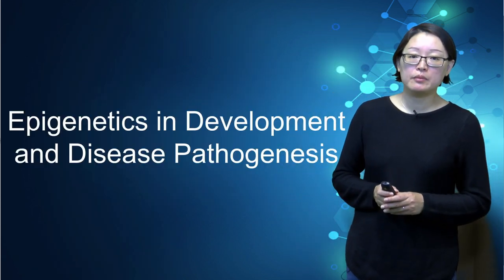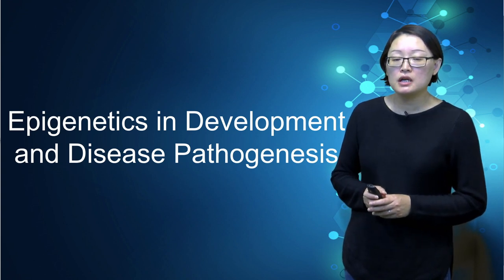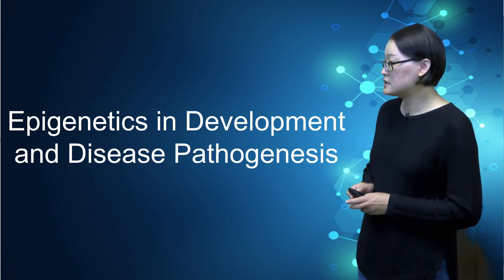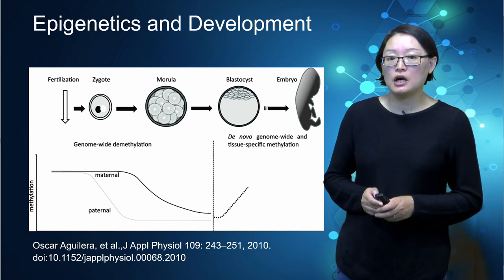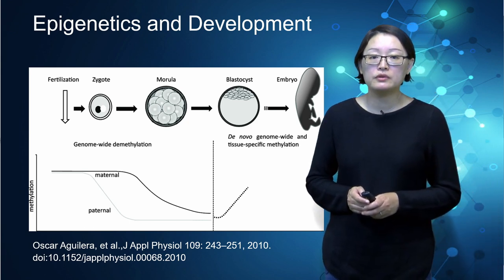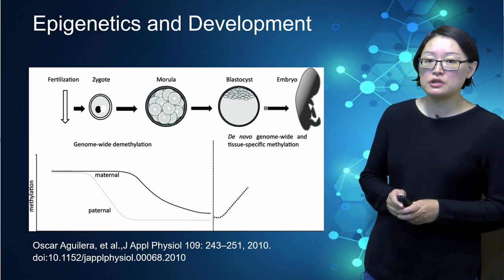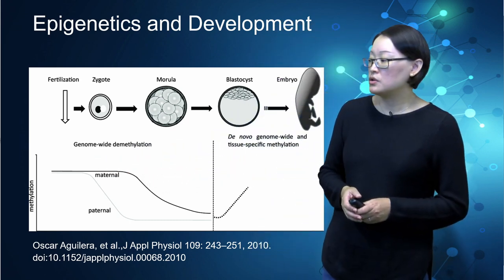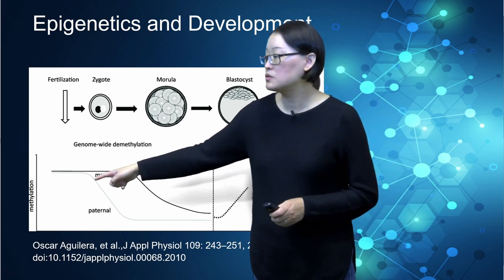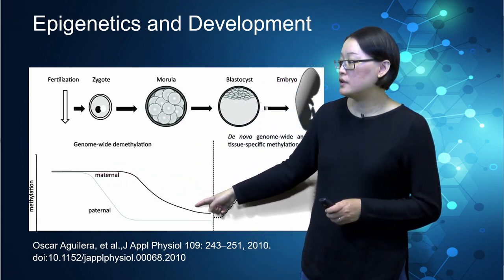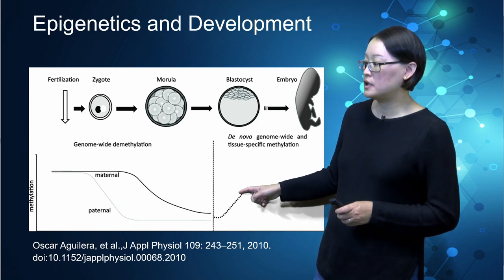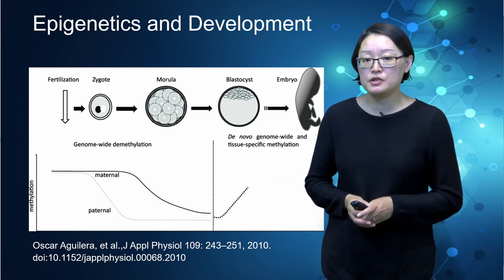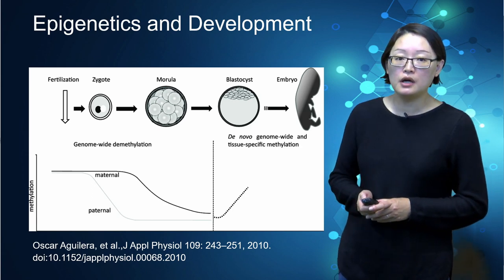You may wonder why we study epigenetics and how it's relevant to us. Epigenetics is crucial for both development and disease pathogenesis. The effects of epigenetics on our development happen even before we are born. This graph demonstrates the changes in DNA methylation during embryonic development. During early development, DNA methylation marks are largely removed and erased, and then novel synthesis of DNA methylation takes off soon after. At a later stage, tissue-specific epigenetic marks are set up as well.